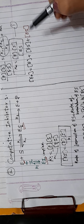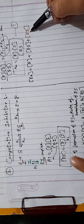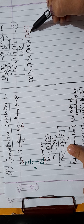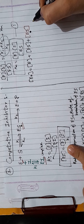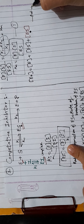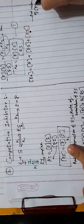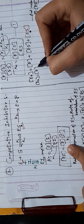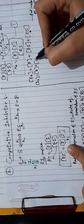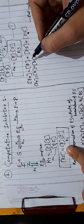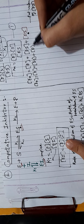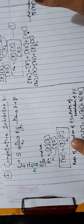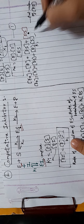We already have the value of EI, so we substitute it in. Putting the value of EI into the total enzyme equation gives: E0 = [E] + [ES] + [E][I]/Ki.